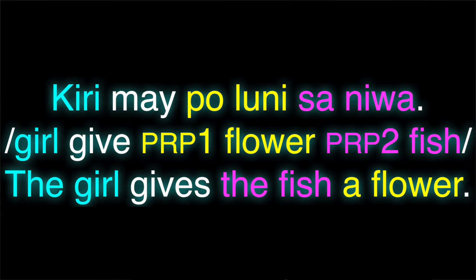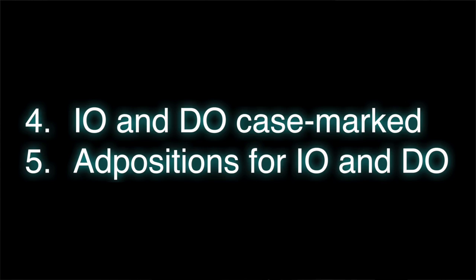Flipping them up shouldn't make a difference. You can do that with case inflections, or you can also do the same thing with adpositions. With adpositions, the example would be 'Kiri mai po luni sa niwa' — two prepositions here, one that marks the direct object and one that marks the indirect object. So that gives us our next two marking strategies: strategy four, marking all three roles with case inflections; or strategy five, marking the relevant roles with adpositions, with the other one being unmarked.